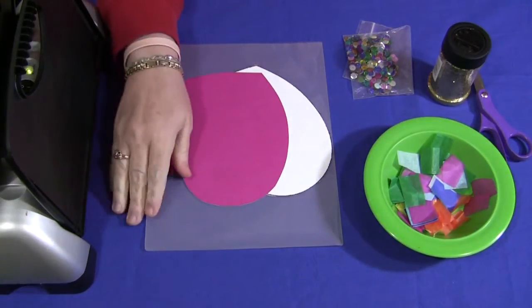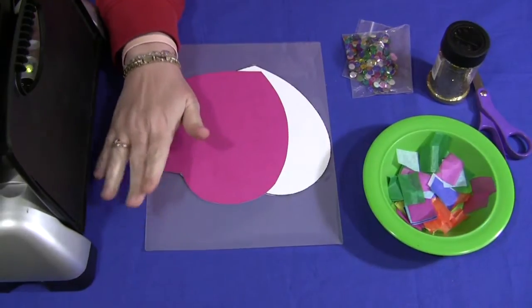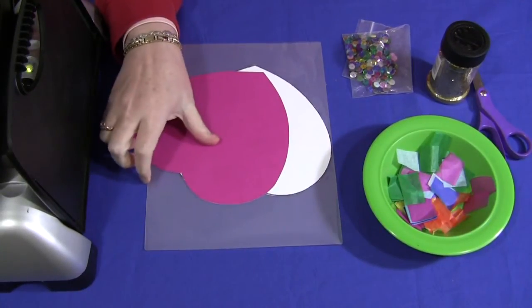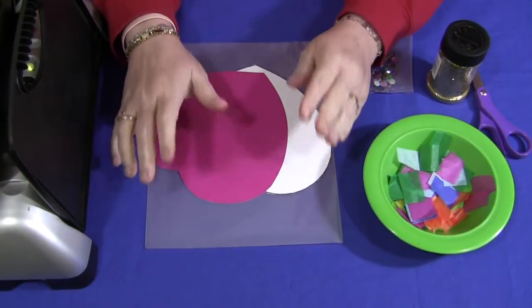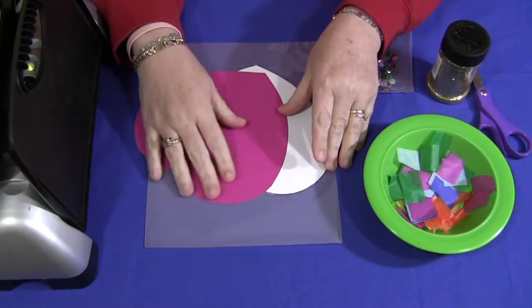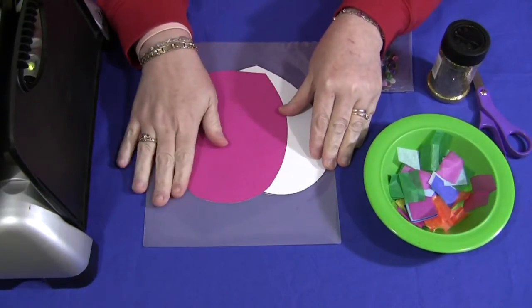You'll need to have either a laminator with a laminating pouch for each sun catcher that you make or you can use contact paper. But I recommend using a laminator as contact paper is very sticky and kind of messy and it always has bubbles in it when you use that.